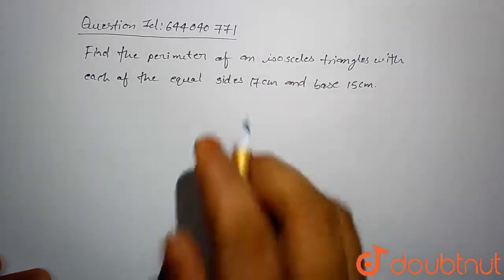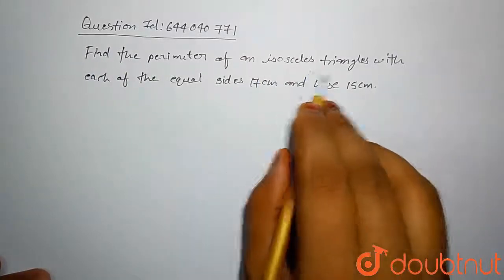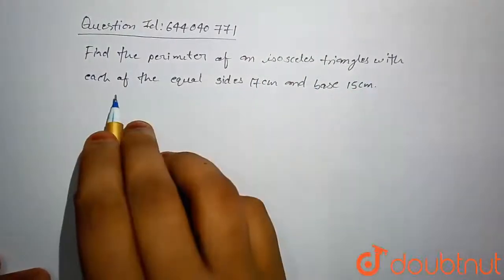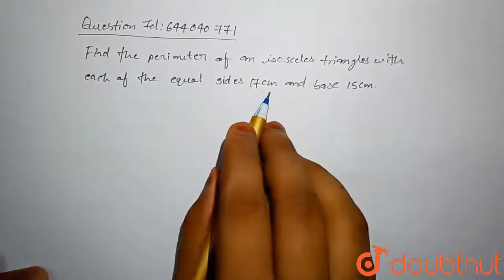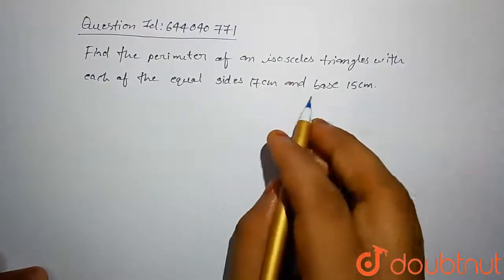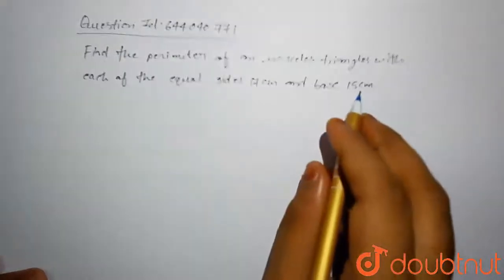Hello friends, today our problem is: find the perimeter of an isosceles triangle with each of the equal sides 17 centimeter and base is 15 centimeter.